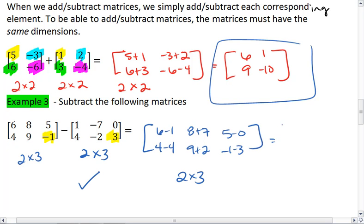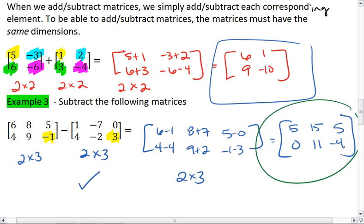Which then ends up equaling 6 minus 1 is 5, 8 plus 7 is 15, 5 minus 0 is 5. 4 minus 4 is 0, 9 plus 2 is 11, and negative 1 minus 3 is negative 4. And that is our final answer.